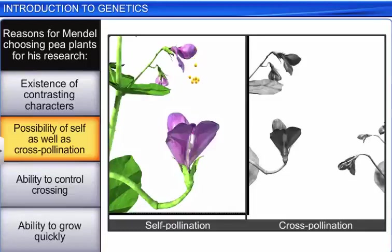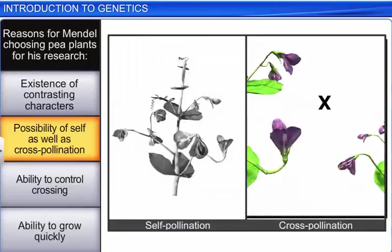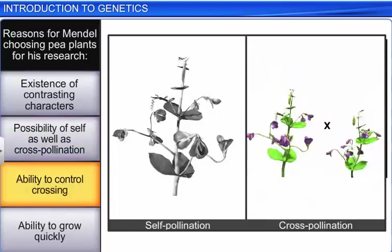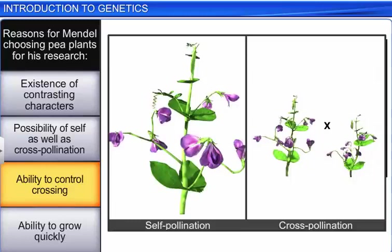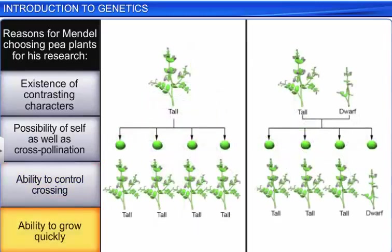Moreover, self-pollination as well as cross-pollination was possible in these plants, and crossing between these plants could be controlled. In addition, these plants grow quickly and produce a large number of offspring.